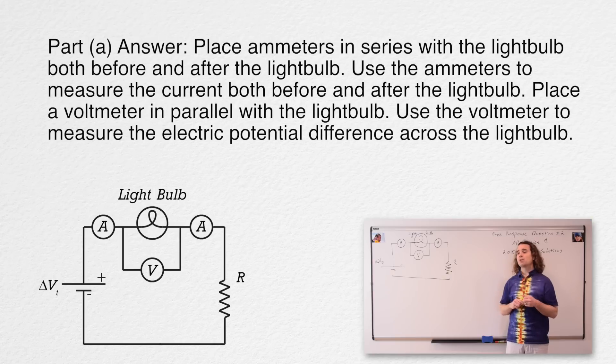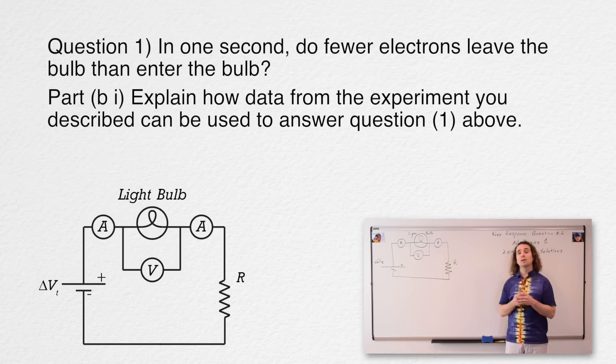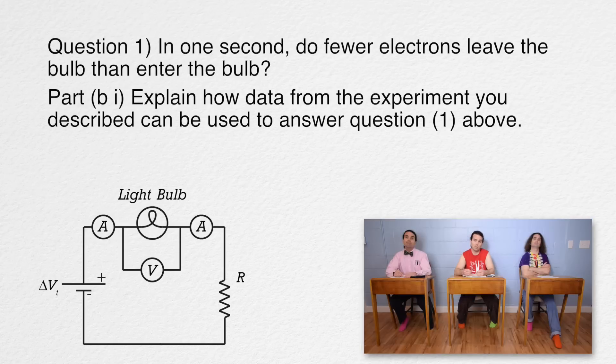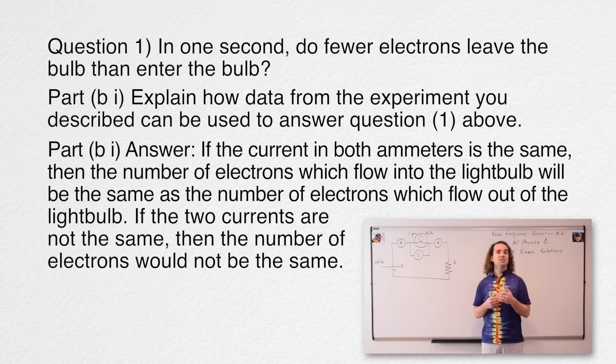And Bo, please read part B(i). Explain how data from the experiment you described can be used to answer question one above. Bobby? Okay. We need to write, if the current in both ammeters is the same, then the number of electrons which flow into the light bulb will be the same as the number of electrons which flow out of the light bulb. And if the two currents are not the same, then the number of electrons would not be the same.